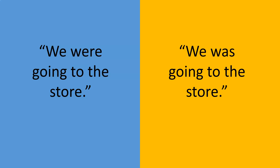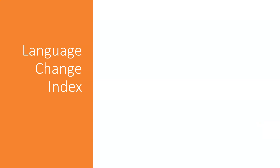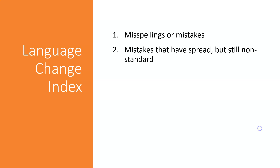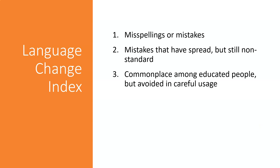But dialects change over time, and the old ways don't always stay correct. There's something called a language change index that rates grammatical usage on a scale from one to five. Stage one is for misspellings or mistakes that are generally rejected by almost all users. Stage two is for usages that have spread to more people, but are still considered non-standard. Stage three items are commonplace among many well-educated people but are still avoided in careful usage — for example, saying 'I better do this' instead of 'I had better.'